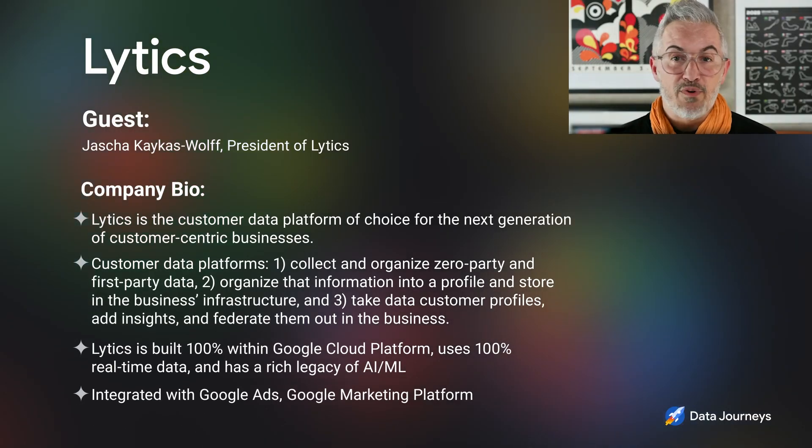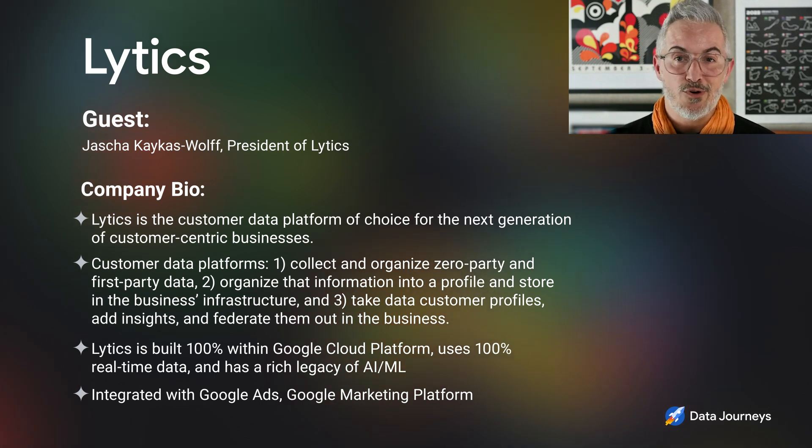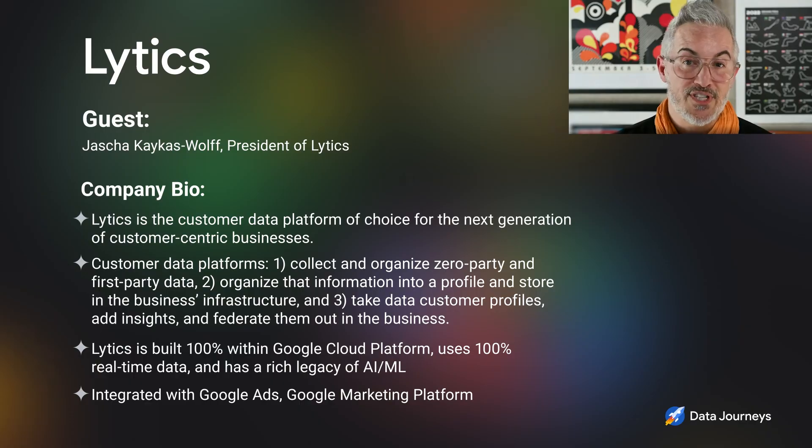When Lytics creates a profile, we actually call back into Vertex. We do a bunch of inferred enrichments on top of it. We use NLP and a bunch of other types of technology to add about 200 different inferred attributes on top of that profile. We create this really rich profile because of our relationship with Google Cloud. All of those insights from those inferred attributes get shared around the enterprise. We're 100% built in GCP, fully integrated with Google Cloud, Google Ads, and the Google Marketing Platform. We have a rich legacy with AI and ML, and in particular Vertex. So Google Cloud has introduced a lot of changes around price optimization, compressed storage, additions, and auto-scaling — how are you taking advantage of these innovations?